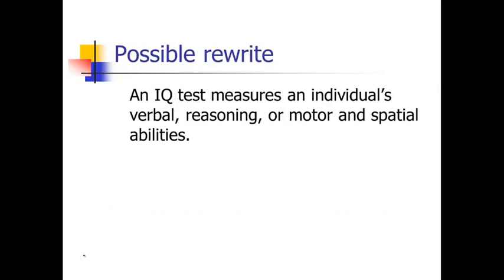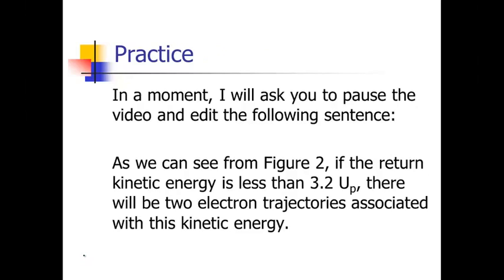So again, hopefully in your rewrite you've got something similar and were able to strip a lot of those excess words out. Okay, one last example here. It says: as we can see from figure two, if the return kinetic energy is less than 3.2 UP, there will be two electron trajectories associated with this kinetic energy. So go ahead and pause the video and edit that on your own, and then we'll talk about it afterwards.